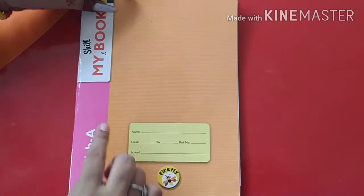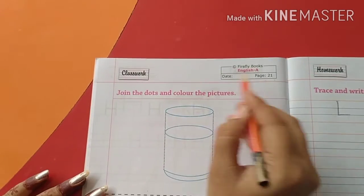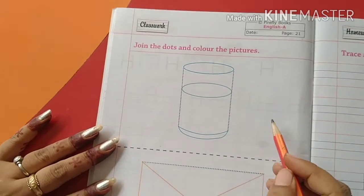English A. Open the book. Page number 21. In classwork. This page 21 is your classwork.